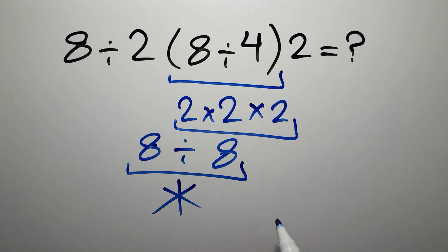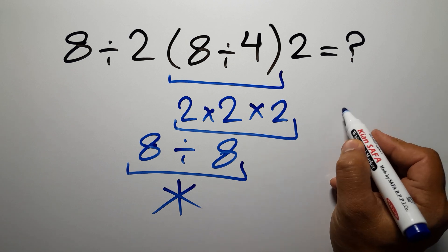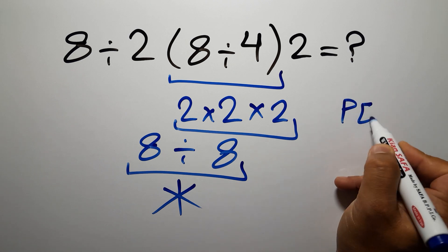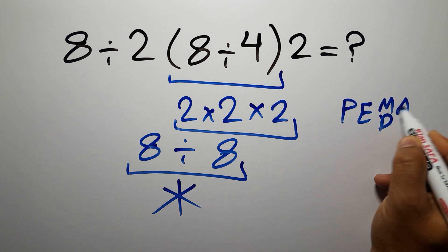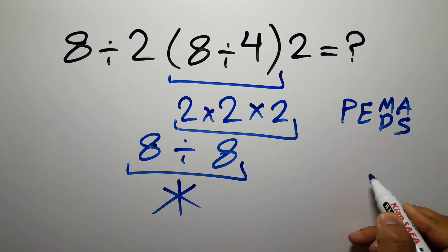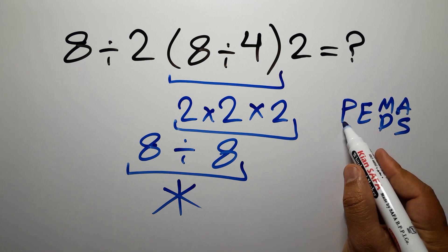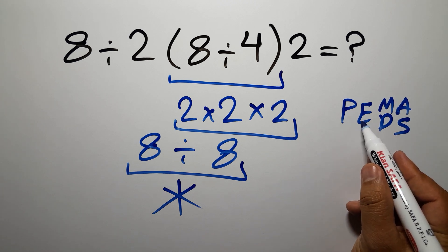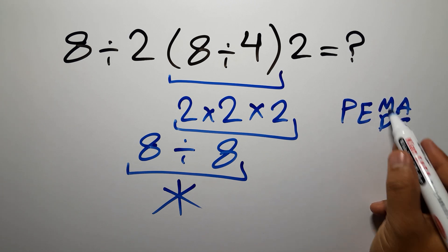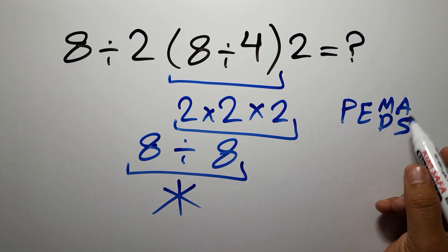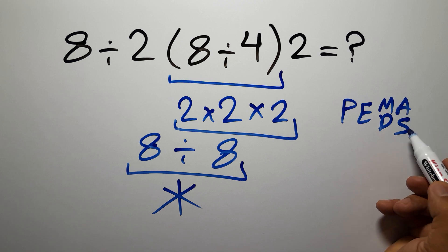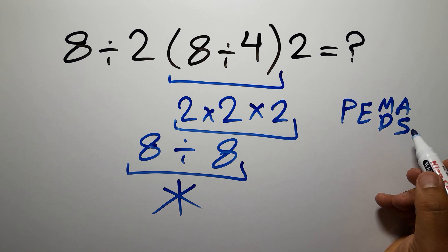Because according to the order of operations, which is PEMDAS: P stands for parentheses, E stands for exponents, M and D stands for multiplication and division, and A and S stands for addition and subtraction.